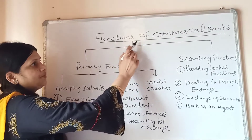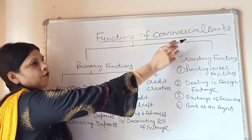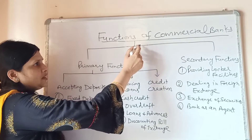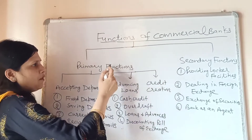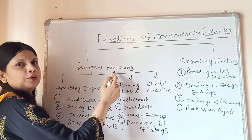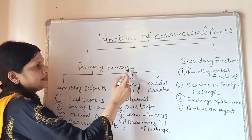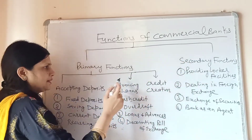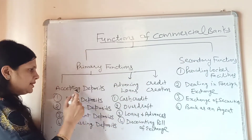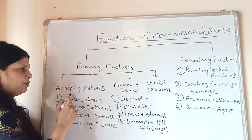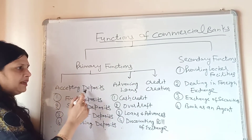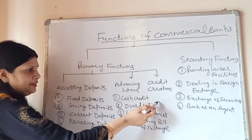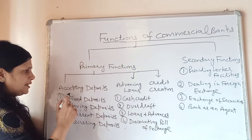Now the next topic is the functions of commercial banks. Commercial banks perform mainly two types of functions: primary functions and secondary functions. Primary functions include accepting deposits, advancing loans, and credit creation.